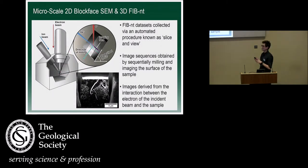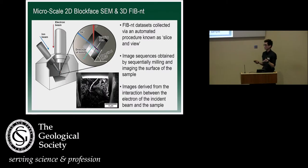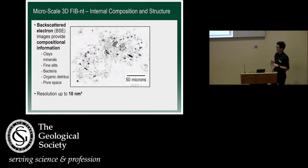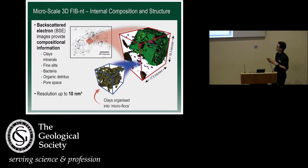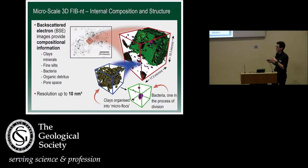Moving on to the micrometre data sets, we used a fairly new technique known as focused ion beam nanotomography. Basically, what this does is it uses a normal SEM — you have your electron beam and your ion beam — and you cut and take sequential images, and that allows you to create a 3D volume and create lots of nice pretty pictures. This is a volume that is about 15 microns cubed. You can see it contains decaying organic matter, individual bacteria within it, and clay minerals. We're at the resolution where we can see bacteria splitting and begin to understand how these structures associate with clay grains. The bacteria form these little nuclei and attract clay minerals around them as a means of nutrient assimilation.